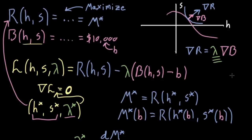Last video I showed you this really crazy fact. We have our usual setup for this constrained optimization situation: a function we want to maximize, which I'm thinking of as revenues for some company, and a constraint, which I'm thinking of as some kind of budget for that company.